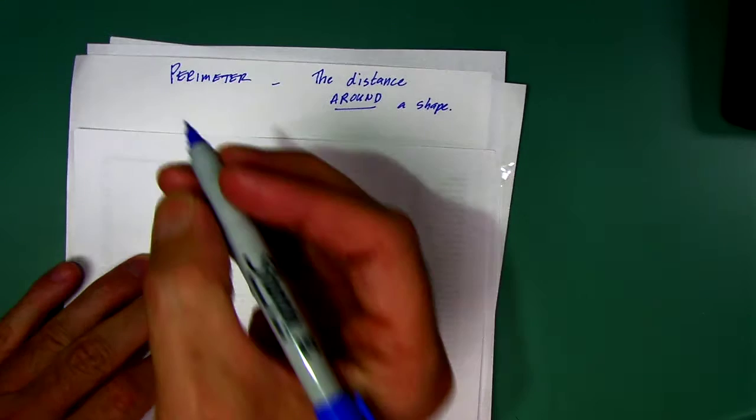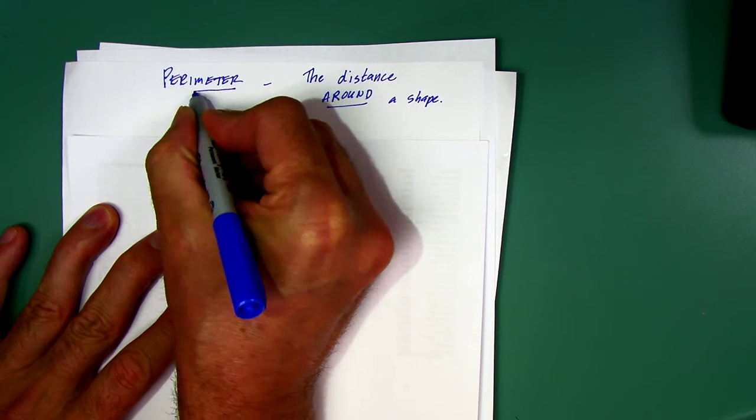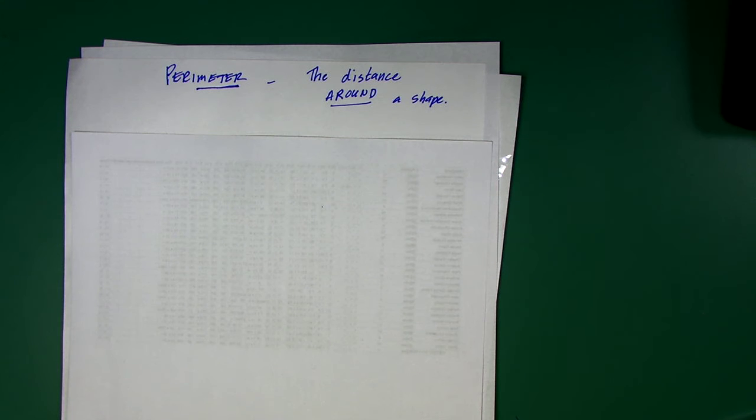So first off, let's look at the word perimeter. Perimeter has another word in it. When I ask people what does meter mean, a lot of them want to say it means metric, right? Metric is a system of measurement, but meter actually means measure.